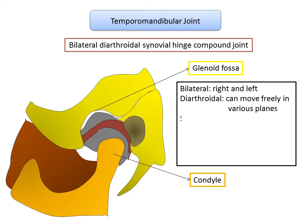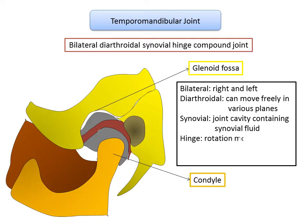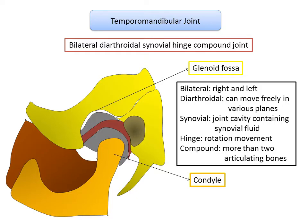Synovial indicates a joint cavity containing synovial fluid, which is a lubricating fluid present between the joints. Hinge movement is associated with rotation of the mandible. The mandible can make two types of movements: rotation, that is the hinge movement, and translation, that is the gliding movement. It is a compound joint, meaning more than two bones are articulating — the temporal bone, the condyle, and the articular disc, which acts as a third bone. Each compartment — superior and inferior — acts as a separate joint during function.